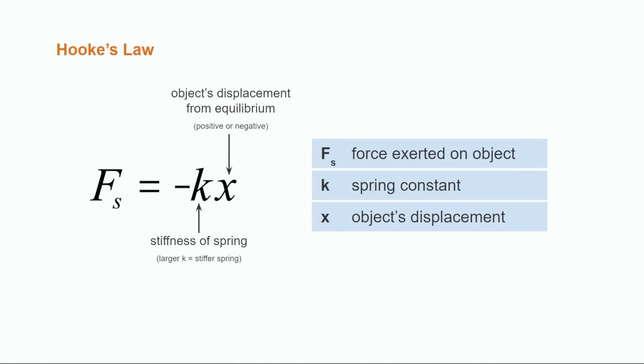If a spring is stretched or compressed, then it will exert a force on any object attached to it, trying to either pull or push the object back to the equilibrium position. Hooke's Law tells us that the force exerted on the object is directly proportional to the object's displacement. The constant k is the spring constant, which is a measure of how stiff or soft a spring is, with larger values of k corresponding to stiffer springs.